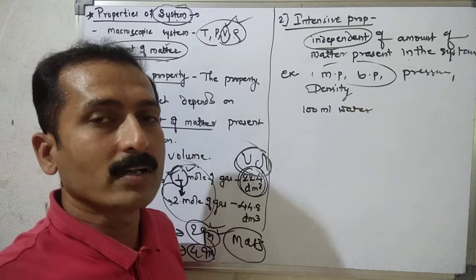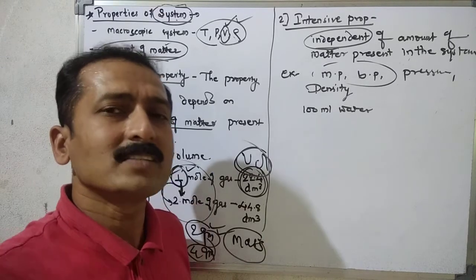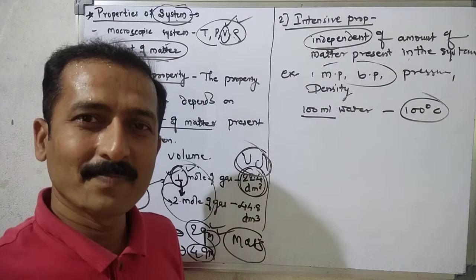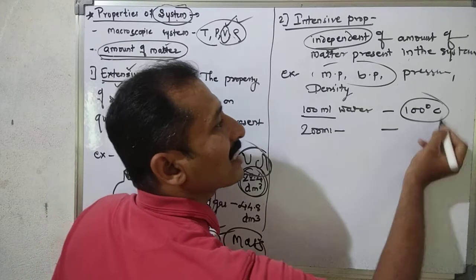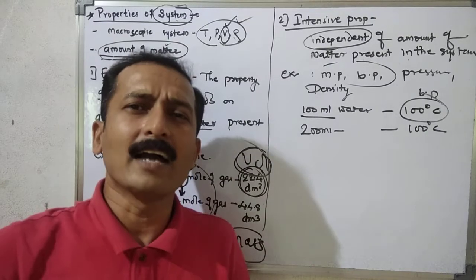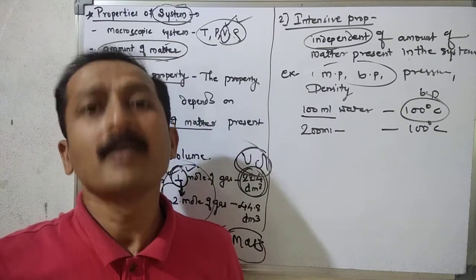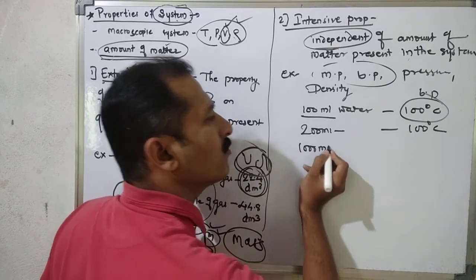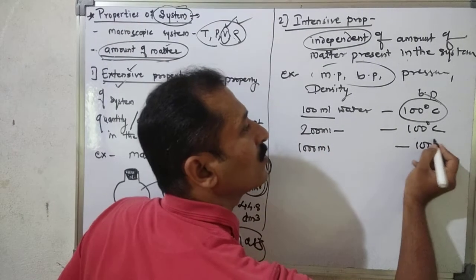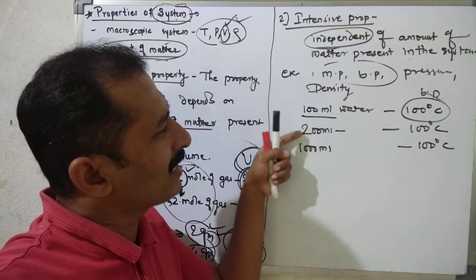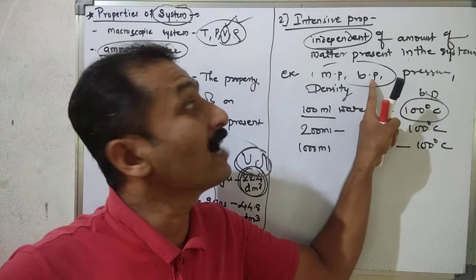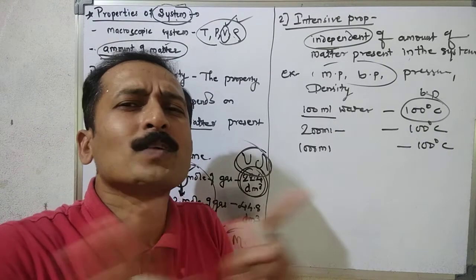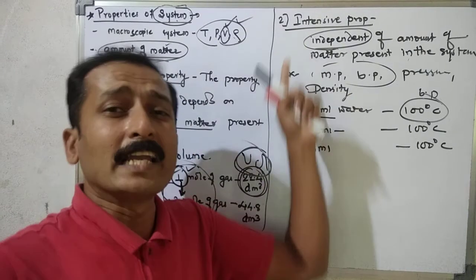For example, I have taken 100 ml of water. This 100 ml of water boils at 100 degrees Celsius. Even if you change the amount of matter, the boiling point property does not change. Such a property is called intensive property.